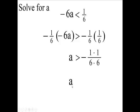So final answer: a is greater than negative one over thirty-six. And in set notation, the set of all a such that a is greater than or equal to negative one over thirty-six. All right.